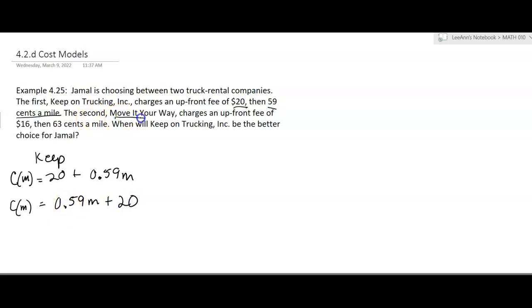Okay. The second company, move it your way. So the move company, they charge an upfront fee. So their function is going to be a different function, but I just used C again. I probably should use M for move. Okay. Now it's all messy. M of M. Okay. That didn't help. I just should have stuck with the C, I guess. They charge $16 plus 63 cents a mile.